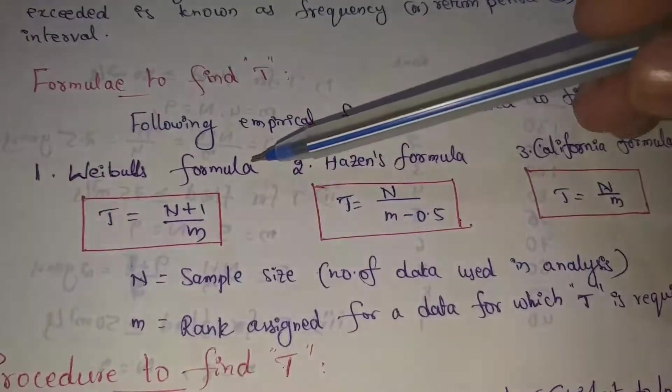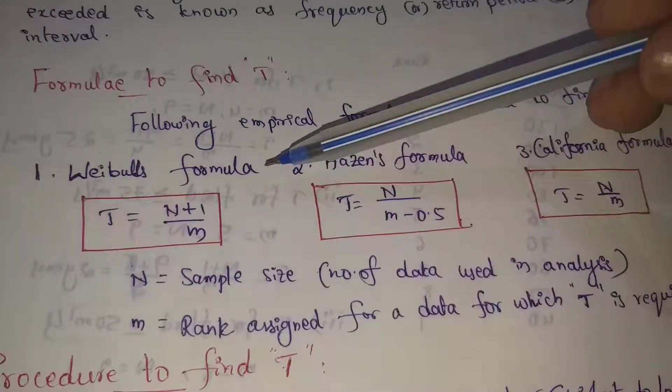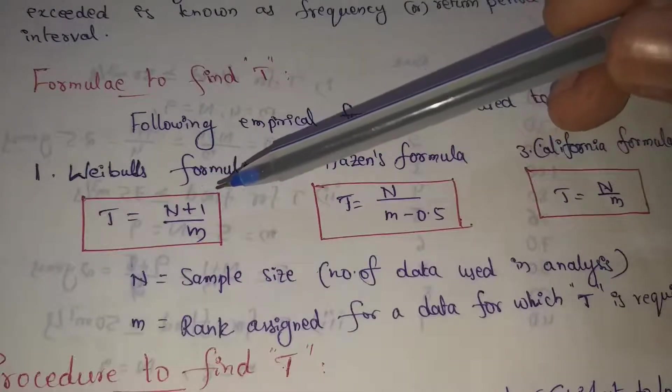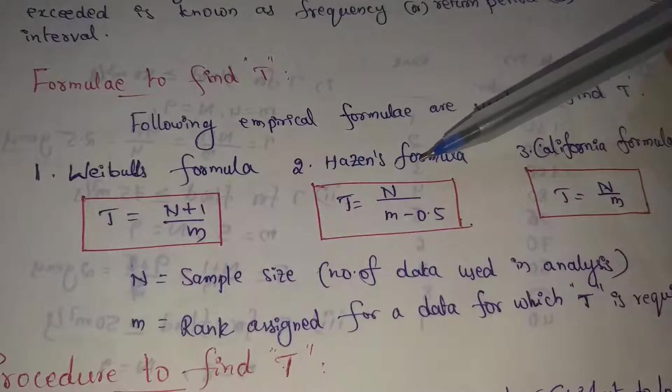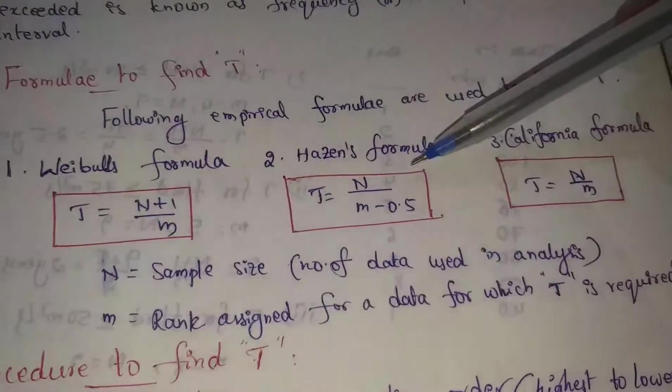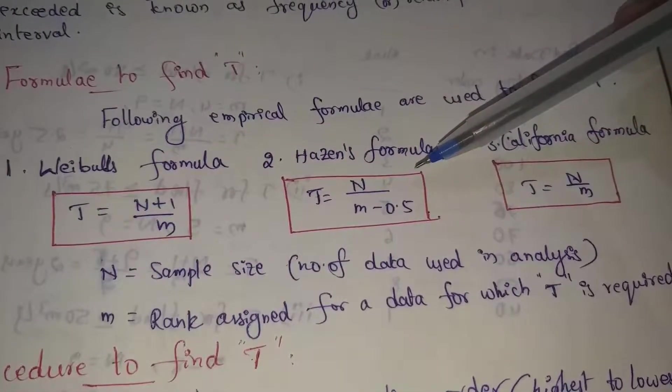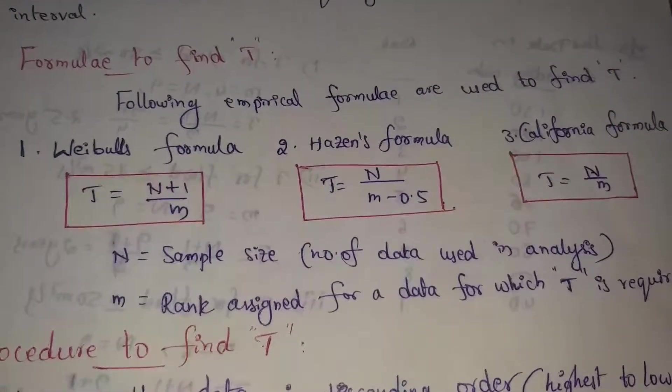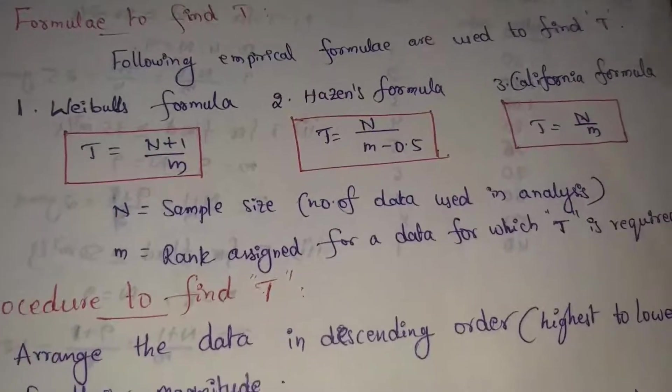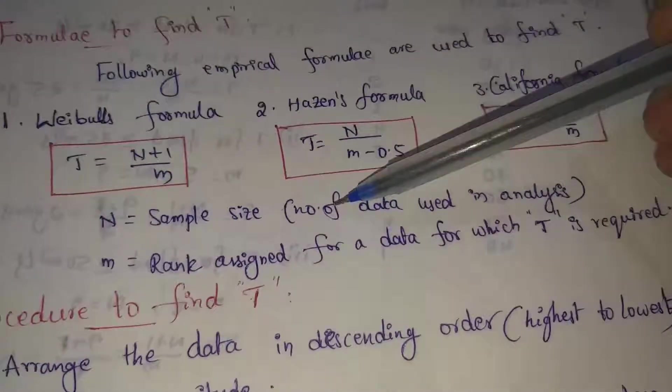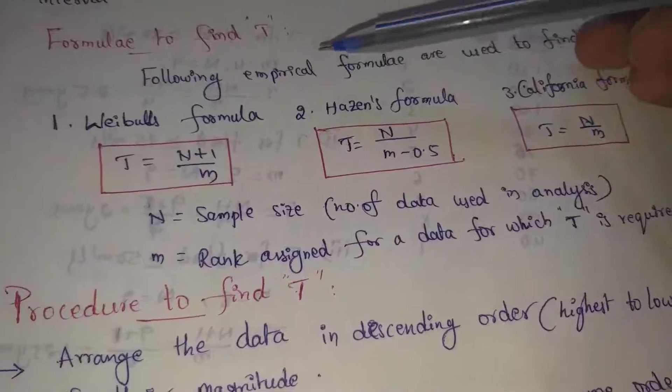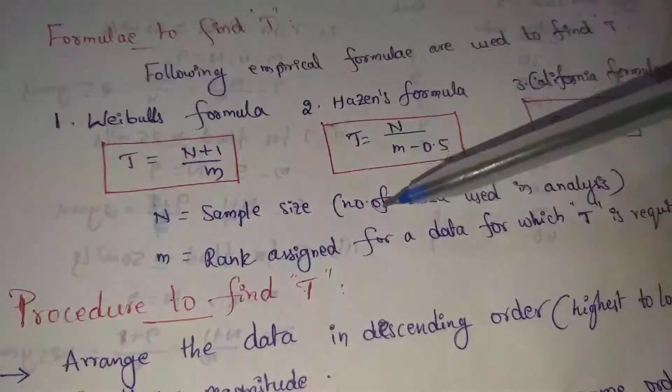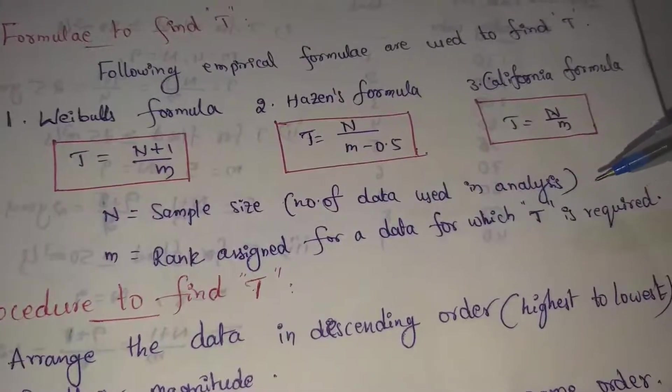Weibull's formula is T equals N plus 1 by m. Hazen's formula is T equals N by m minus 0.5. California formula is T equals N by m. Here N means sample size - the number of data used in analysis. m is the rank assigned for data for which T is required.